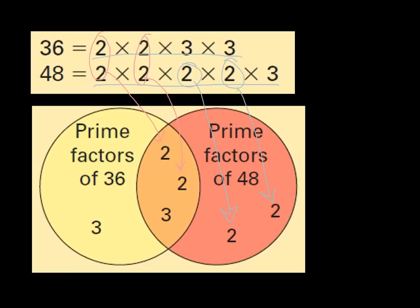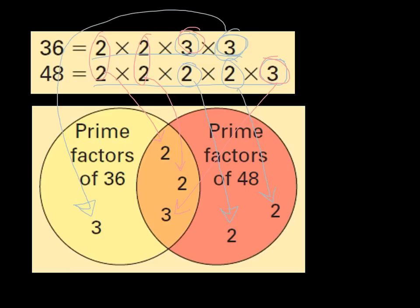Then you'll see that there is a factor of 3 for 36 and a factor of 3 for 48 — those numbers are common and need to be placed in the middle as well. Finally, there's a lone, solitary 3 that doesn't have a partner; it only belongs to 36, so it goes on 36's side. Basically, wherever we see a set of numbers represented in both, those go in the middle. Anything without a partner must go with only the number it belongs to.